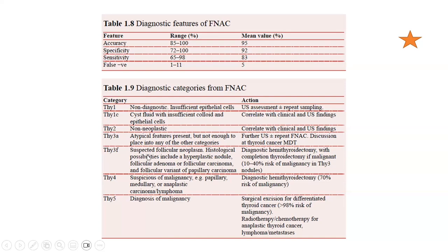Thy3f is suspected follicular neoplasm; histological possibilities include hyperplastic nodule, follicular adenoma, follicular carcinoma, or follicular variant of papillary carcinoma. The best action is diagnostic hemithyroidectomy with completion thyroidectomy if malignant, as there is a 10–40% risk of malignancy. Thy4 is suspicious of malignancy — papillary, medullary, or anaplastic carcinoma or lymphoma — diagnostic hemithyroidectomy is highly recommended with a 70% risk of malignancy. Thy5 is diagnostic of malignancy with a 98% risk of cancer, requiring total thyroidectomy; radiotherapy and chemotherapy may be needed for anaplastic thyroid cancer and lymphoma.